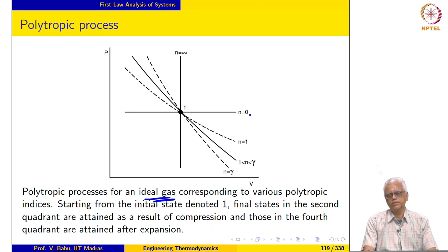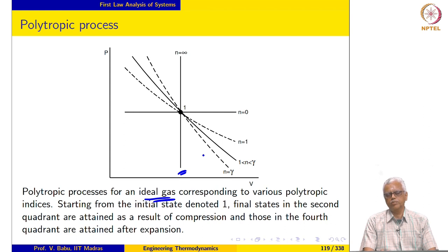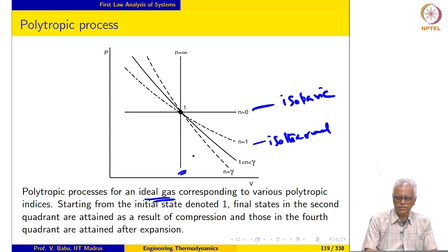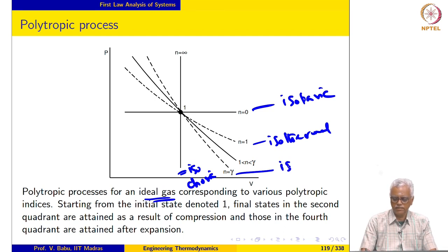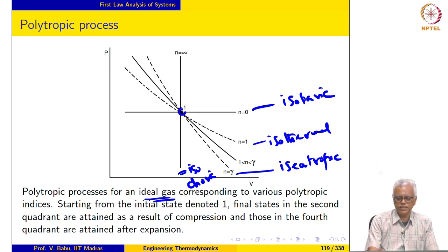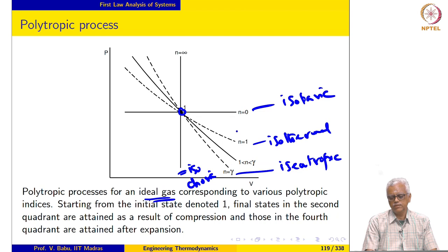Here we are looking at polytropic processes for different indices on a P-v diagram for an ideal gas. n equals 0 represents an isobaric process where P is constant, and n tending to infinity represents an isochoric process where volume remains constant. n equals 1 is an isothermal process. States in the second quadrant are obtained by compression processes, and states in the fourth quadrant result from expansion processes.